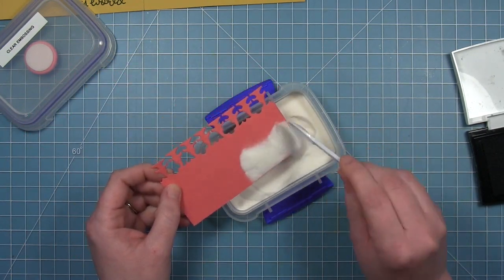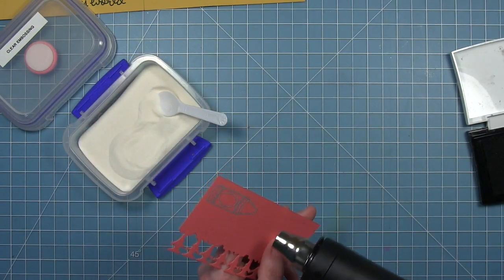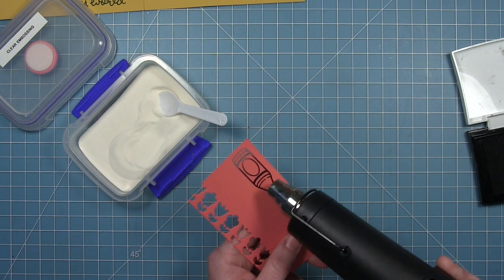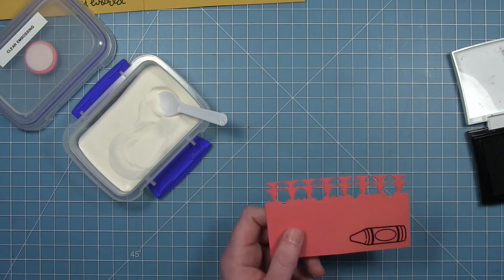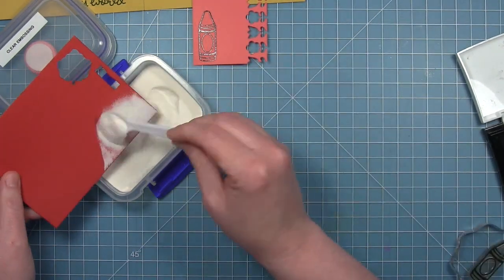And then I'm going to put clear embossing powder on it. Black embossing powder to me always leaves a big mess. This is the perfect way to make black embossing I have found, and it's nice and clean. So a black pigment ink with clear embossing.